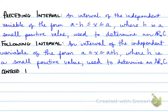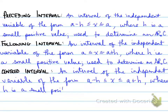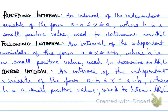The last one is the centered interval. A centered interval is an interval of the independent variable of the form a minus h to a plus h, where h is a small positive value used to determine the average rate of change. That means we're looking 0.001 before and 0.001 after the given value a.